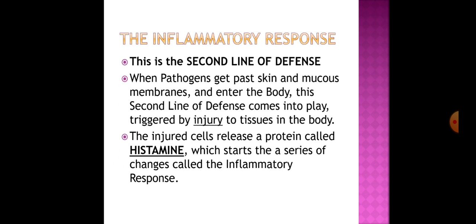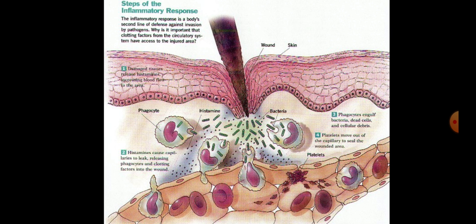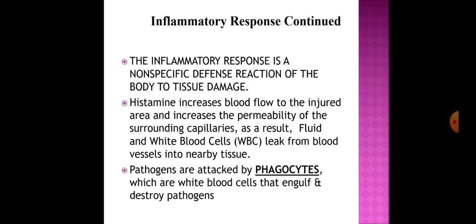The second line of defense: when pathogens get past skin and mucus membranes and enter the body, this second line of defense comes into play, triggered by injury to tissues. The injured cells release a protein called histamine, which starts a series of changes called the inflammatory response. The inflammatory response is a non-specific defense reaction of the body to tissue damage. Histamine increases blood flow to the injured area and increases the permeability of the surrounding capillaries.